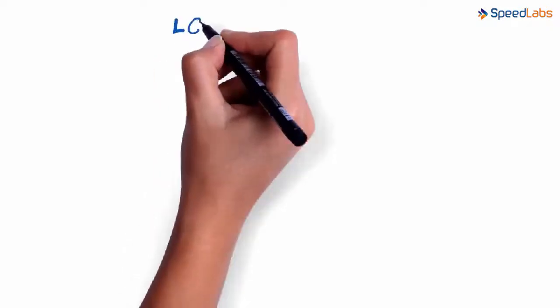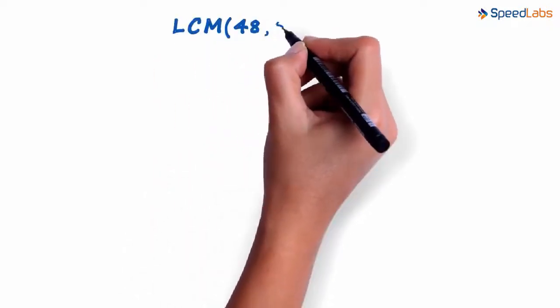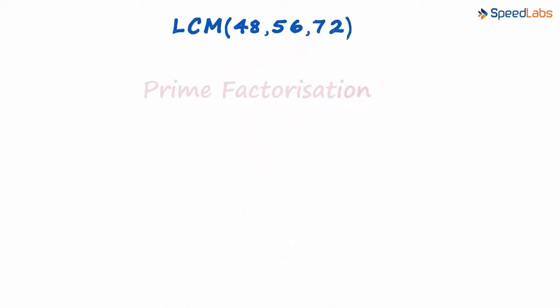Let's try to find the LCM of 48, 56 and 72 using the Prime Factorization method. We follow the same procedure we used to find the LCM of two numbers.